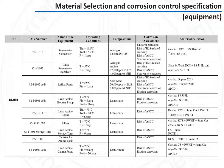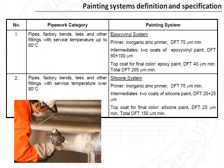The selection of materials of construction does not end the work of the materials specialist. He also specifies the type of coating which must be applied to protect against external corrosion, by defining various systems for various types of conditions — in particular the temperature of the lines and equipment — and issues a painting specification specifying the surface preparation as well as the paint system for every service.